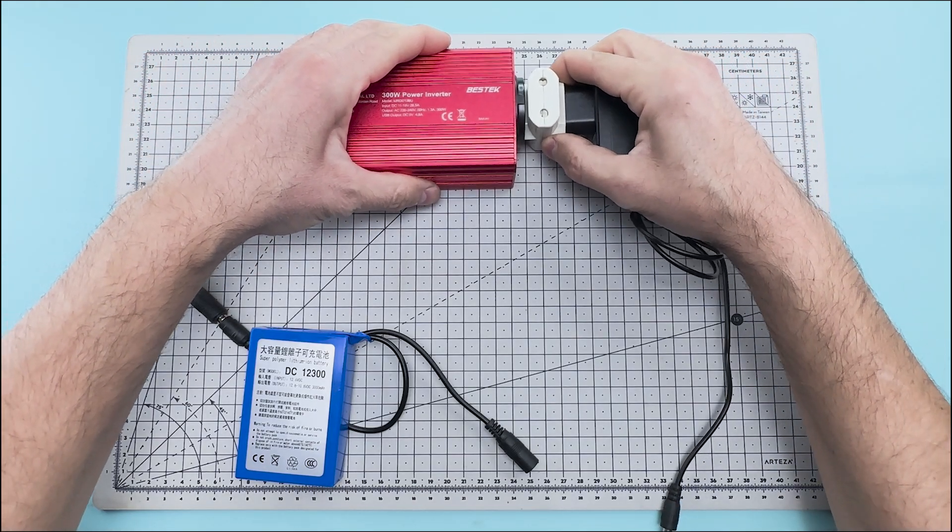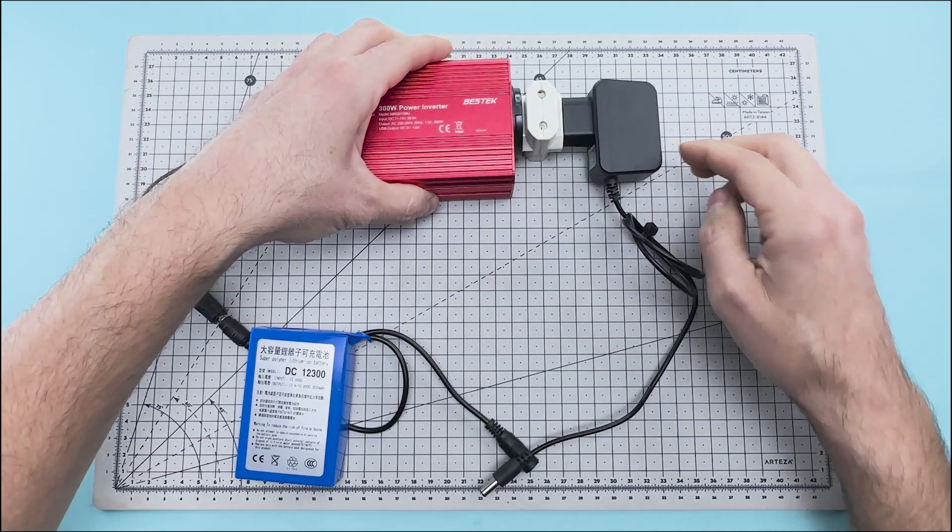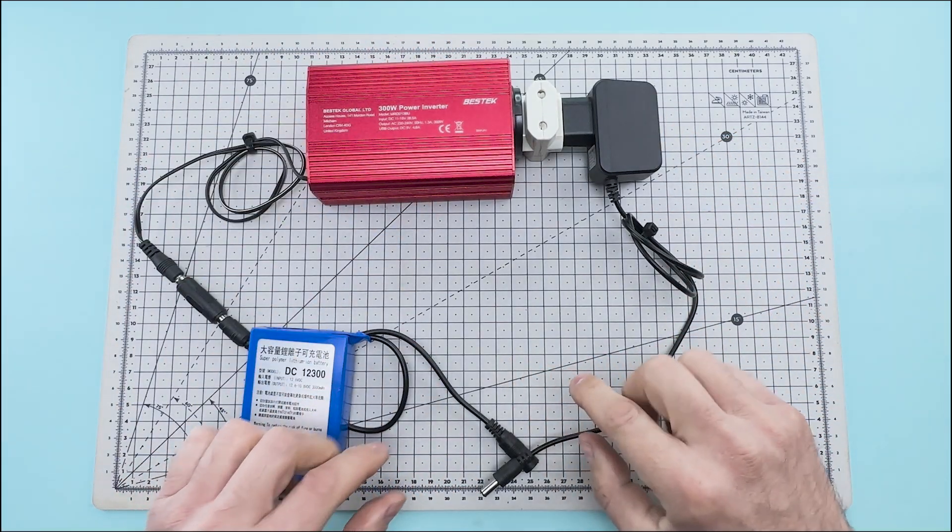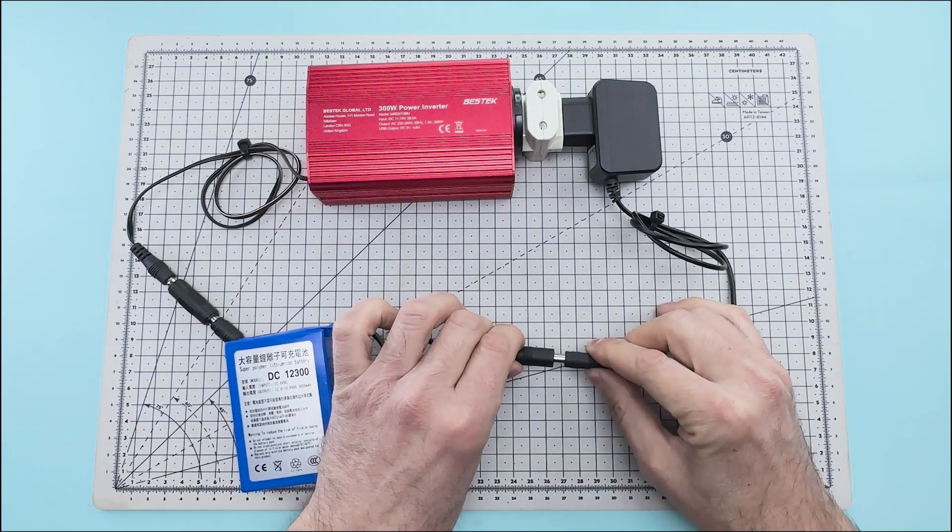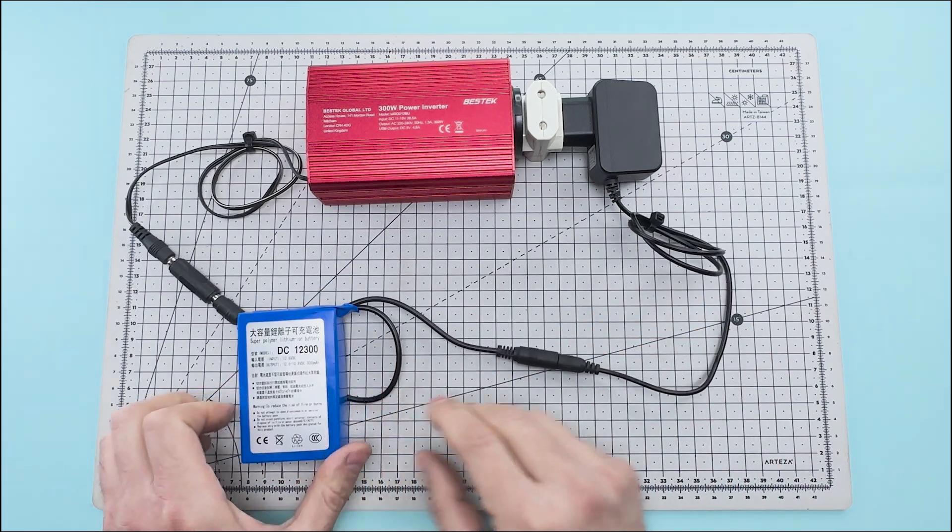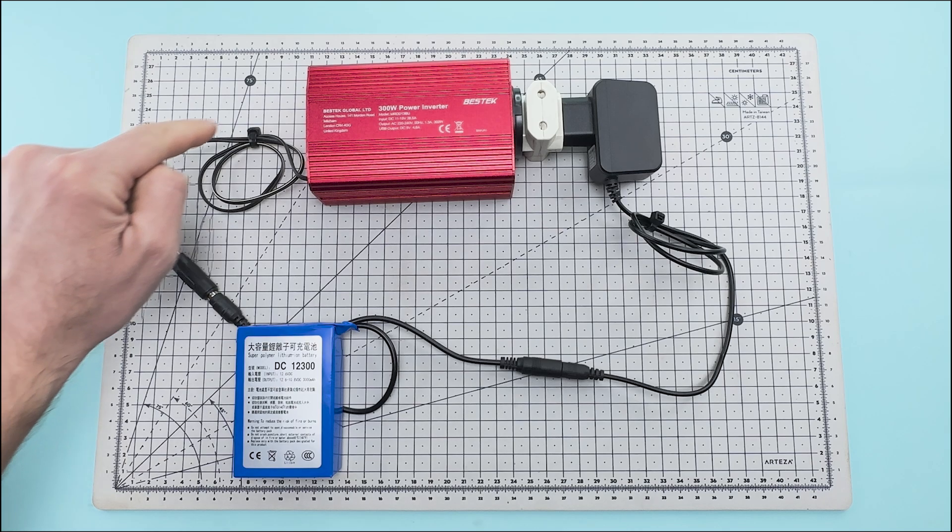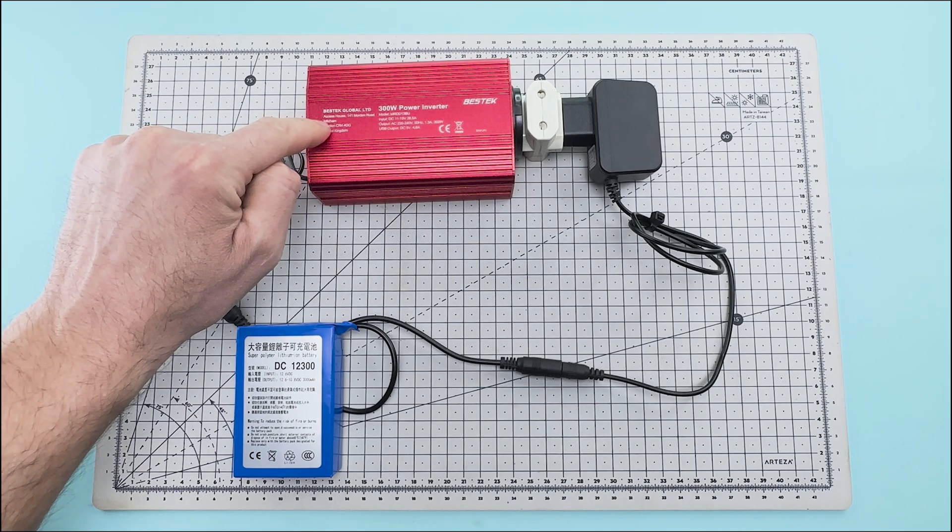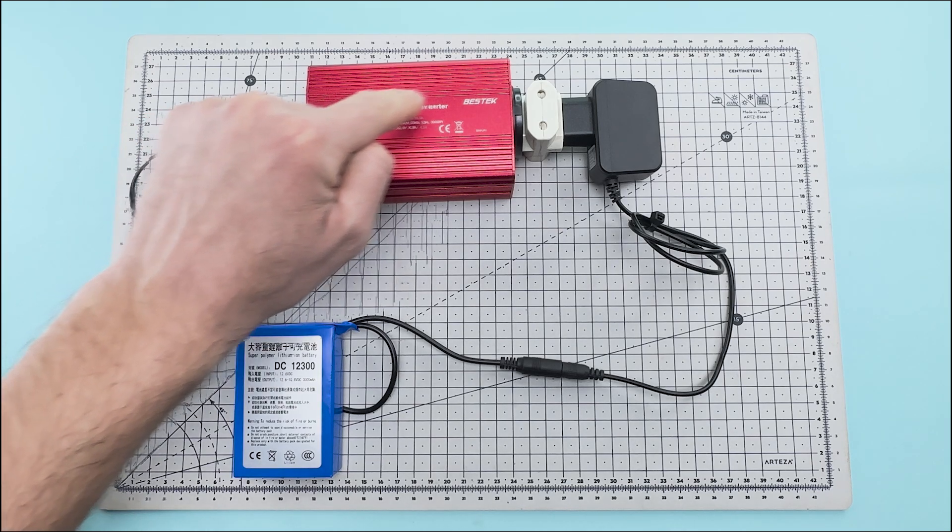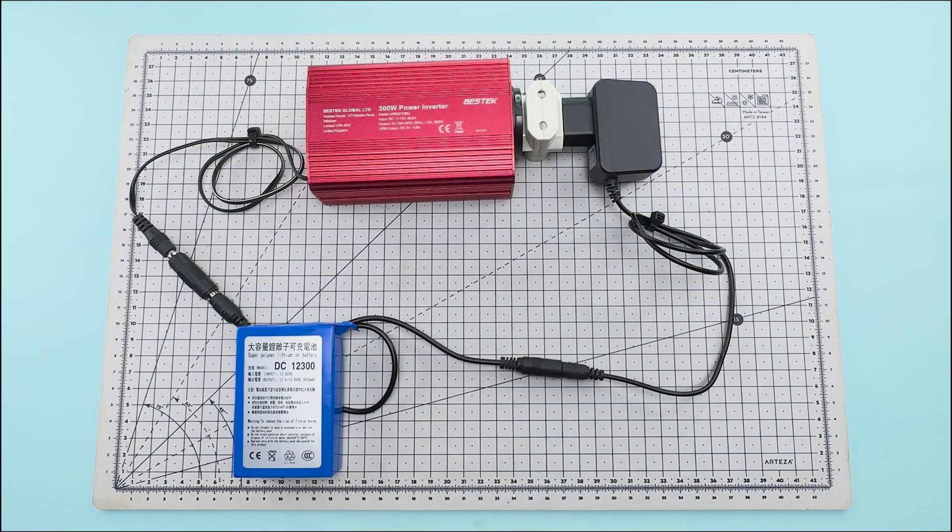Now we connect the battery charger to the power inverter using a multi-plug power strip. And now we plug the charger's connector into the lithium battery. This way, the battery is powering the inverter. The inverter receives the battery's voltage and transforms it into 220 volts of alternating current. And with the transformer, we convert it back to 12 volts of direct current to charge the battery.